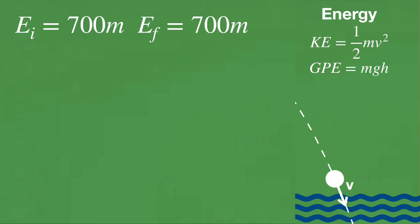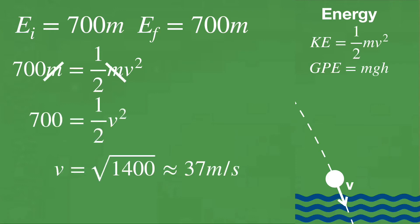However, at the end of the trajectory, there is no gravitational potential energy. That means that all of the energy must be in the form of kinetic energy, so 700m equals the kinetic energy final. Here, our m finally drops out, and some simple algebra tells us that the velocity is the square root of 1400, or roughly 37 meters per second.